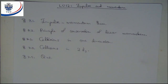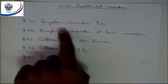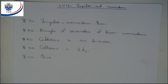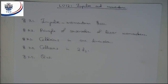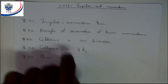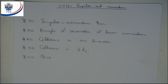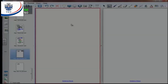Hi again. Today we'll be looking at learning unit number 12, which is impulse and momentum. Here's the plan for today — it's a short section. We'll start with the impulse-momentum theorem, but before that we'll define what impulse and momentum are. Then we'll derive the theorem and look at the principle of conservation of linear momentum. This is on pages 53, 54, and 55 of the study guide.